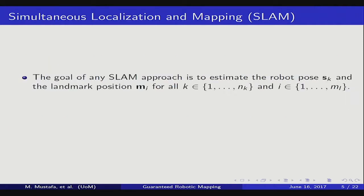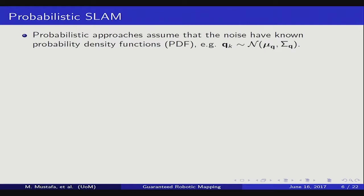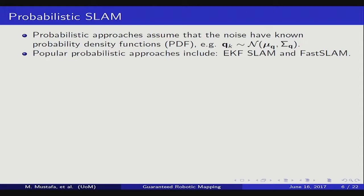The goal of the SLAM approach is to estimate the robot position x_k and the landmark position m_i, for all time steps k from 1 up to N_K and all landmarks 1 up to N_L. There are different approaches — popular ones include the probabilistic approach or the interval approach. The probabilistic approach assumes that the noise associated with each model has some known probability density function. For example, Q_k can be a normal, Laplace, or uniform distribution. Some popular approaches to solve the SLAM problem from a probabilistic point of view are the Extended Kalman Filter SLAM and FastSLAM.